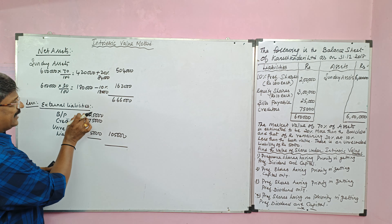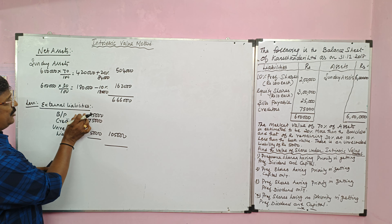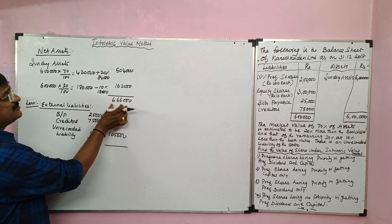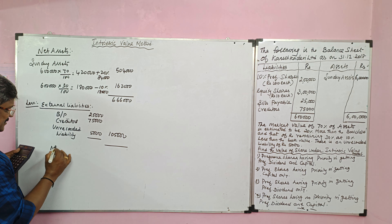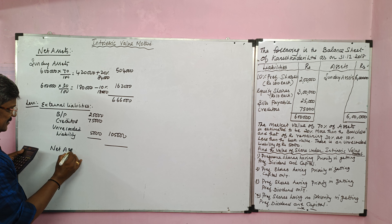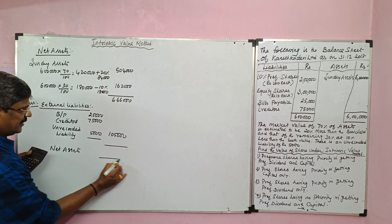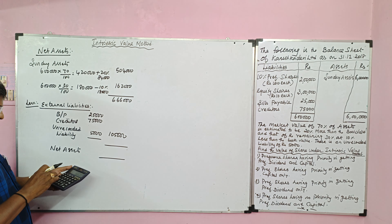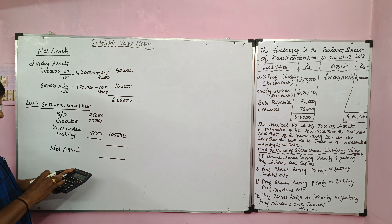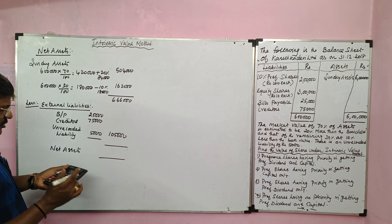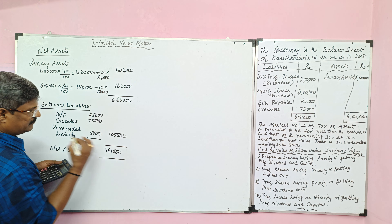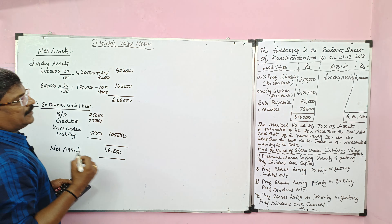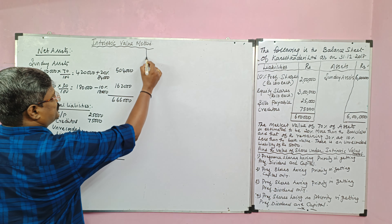Deduct the realizable value of external liabilities from the realizable value of assets to get net assets. So net assets = 6,66,000 minus 1,05,000 = 5,61,000. Now we will apply the four situations.